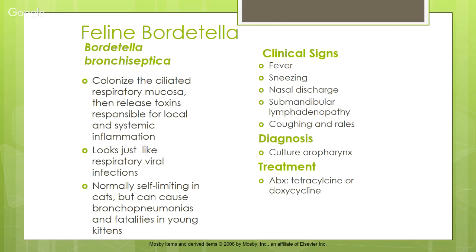Feline Bordetella bronchiseptica colonizes the ciliated respiratory mucosa and releases toxins causing local and systemic inflammation. It looks just like a feline viral respiratory infection even though it's bacterial. It's normally self-limiting in cats but can cause bronchopneumonia and fatalities in young kittens. Clinical signs include fever, sneezing, nasal discharge, submandibular lymphadenopathy, coughing, and rails — crackles you can actually hear in the chest.